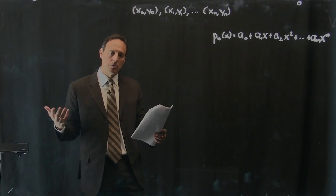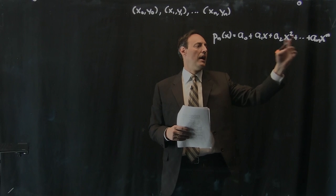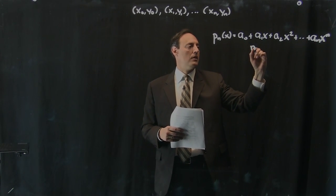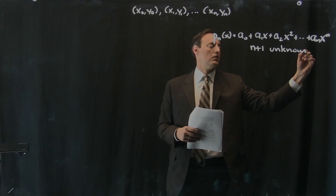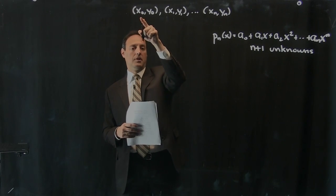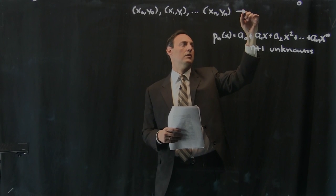Now, how many unknowns are in this? Well, if I go up to nth degree, I have a1, a2, all the way to n, plus a0. So there's n plus 1 unknowns. And notice in my data set, because I start with indexing at 0 all the way to n, there's n plus 1 constraints.